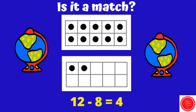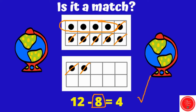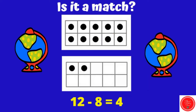How about this one? 12 minus 8 equals 4. You have to take away 8: 1, 2, 3, 4, 5, 6, 7, 8. And we're left with 4. That means this one is a match, so we get to climb.